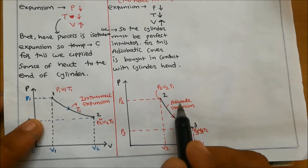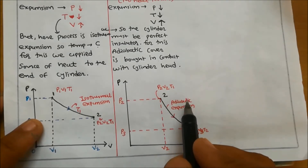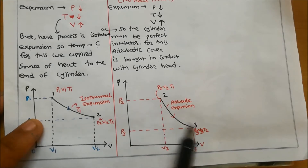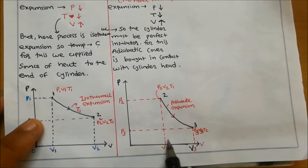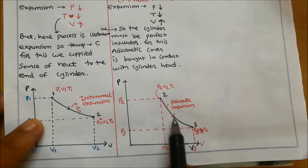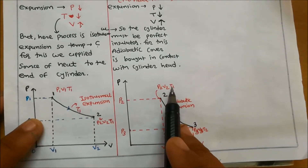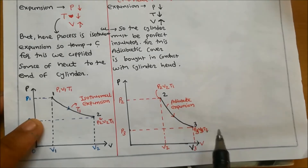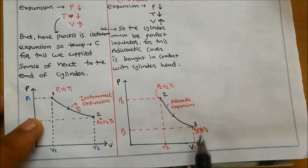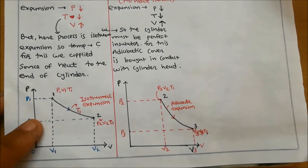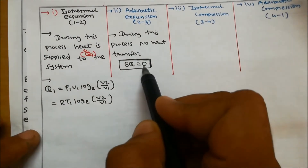On the PV diagram, process 2 to 3 shows pressure decreasing from P2 to P3, volume increasing from V2 to V3, and temperature decreasing from T1 to T2. In this adiabatic expansion process, no heat transfer takes place — delta Q equals zero.